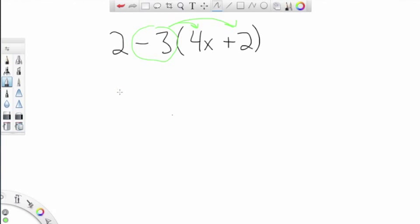So, we're going to rewrite the 2, and we're going to do negative 3 times 4x is negative 12x, and negative 3 times 2 is minus 6.